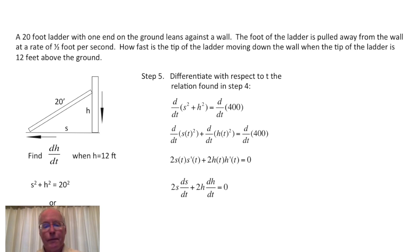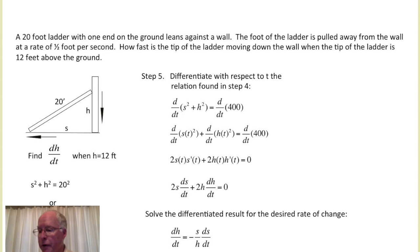Now at this point, remember we want to find dh/dt here. So we can solve this equation for dh/dt. This is just simple algebra. This leads to the following relationship: dh/dt equals minus s over h times ds/dt. We did two things here. We first pulled the 2s ds/dt over to the right side of the equation, and then divided through by the 2h. That isolated dh/dt as minus s over h times ds/dt. We're going to clear the workspace and finish up the problem.